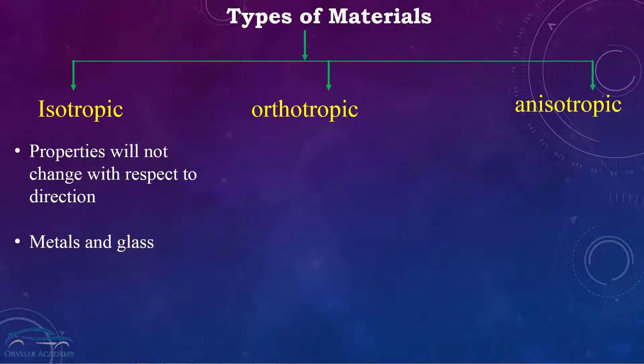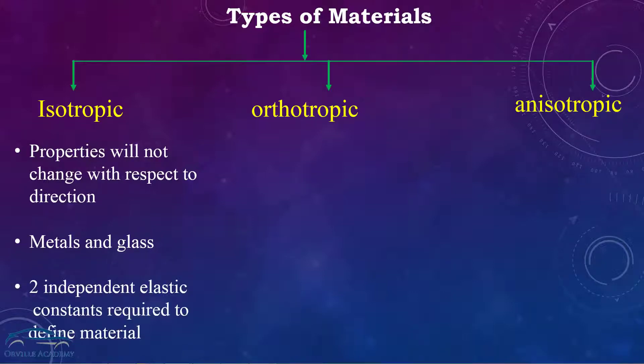In order to completely define the properties of an isotropic material in any FEA software, you will require at least two independent elastic constants. We have four elastic constants: Young's modulus, modulus of rigidity, bulk modulus, and Poisson's ratio. Out of these four elastic constants, you will require to define any two.